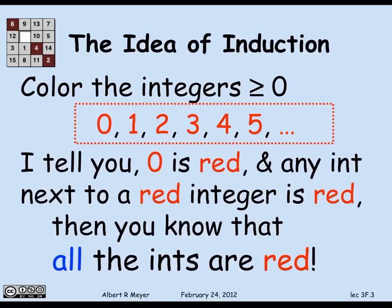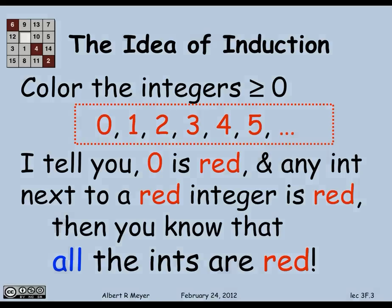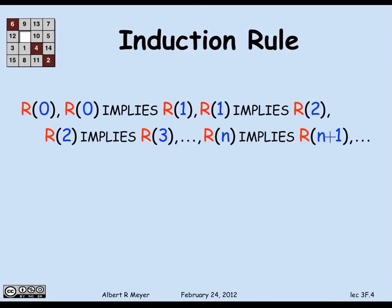This is actually a statement that can be read as the rule of induction. It's a kind of self-evident axiom about numbers. What induction is assuming is that you have some property of numbers — call it red, r. And r of 0 you're told. You're also told that r of 0 implies r of 1, r of 1 implies r of 2, r of 2 implies r of 3, and in general, r of n implies r of n plus 1, and so on.